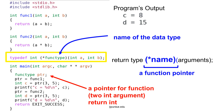Consider this example. This program has two functions at the top. Each function takes two integer input arguments and returns an integer. At the middle of the file, above the main function, a new type for a function pointer is created.